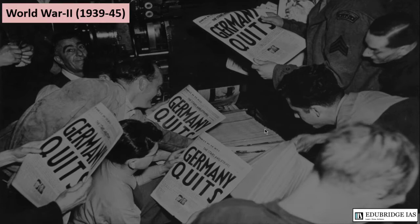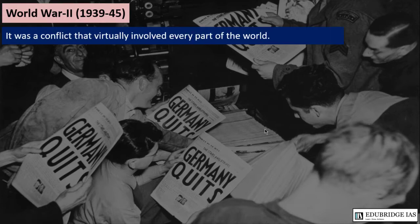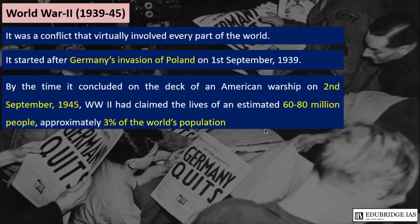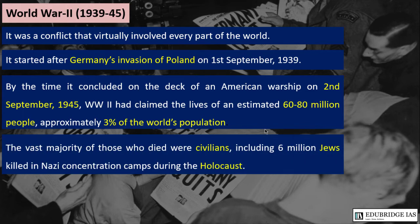Briefly discussing World War II: it was a conflict that virtually involved every part of the world. It started after Germany's invasion of Poland on 1 September 1939 and ended on 2 September 1945. It claimed the lives of an estimated 60 to 80 million people, approximately 3% of the world population at that time. The vast majority killed were civilians, including 6 million Jews killed in Nazi concentration camps during the Holocaust.